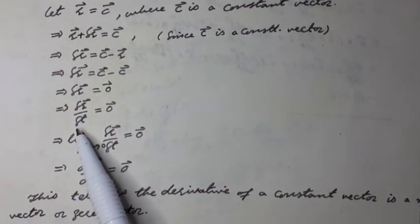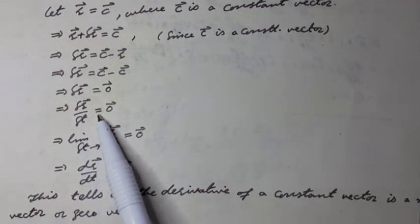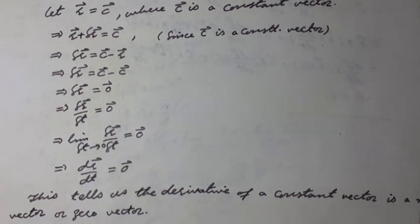It can be written as delta R vector over delta T equal to 0 vector. It can be written as limit delta T tends to 0. Delta R vector over delta T equal to limit delta T tends to 0. So, 0 vector. It can be written as 0 vector.